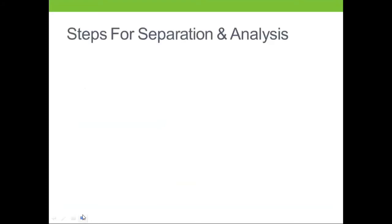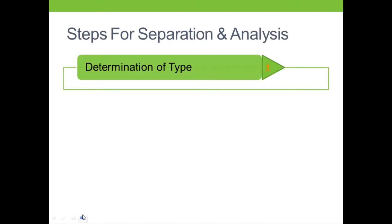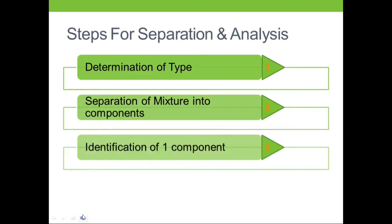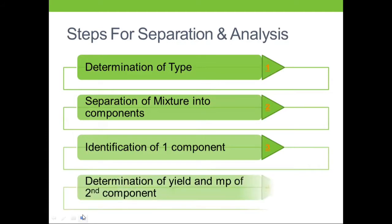Let us now proceed to the determination of type — meaning the chemical nature of the two components. The first step is determination of chemical type. The second is how to proceed for separation. We then proceed for identification of one component; only one has to be identified, and for the other we only report the yield and melting point.